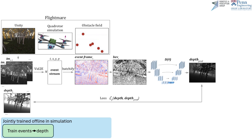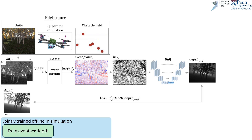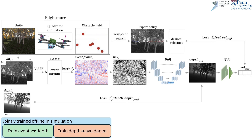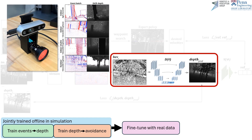We batch events and form a binary event mask, from which we train an events-to-depth perception network. We jointly train a depth-to-velocity avoidance network from the expert policy's velocity commands. Our method allows us to fine-tune the pre-trained perception network with real-world data consisting of synchronized and calibrated events and depth.